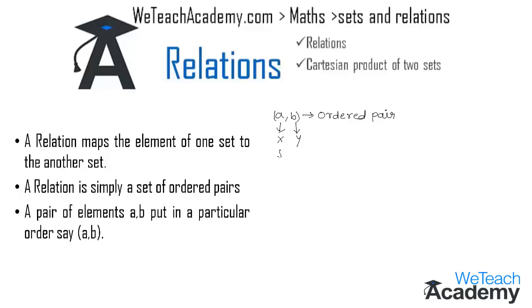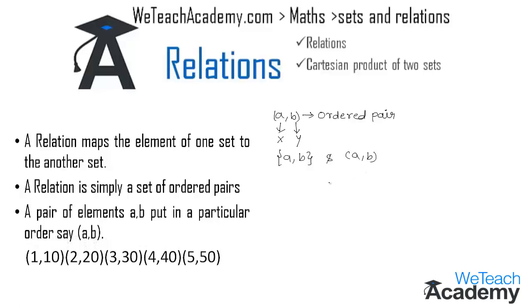The set {a, b} and the ordered pair (a, b) are two different terms. For example, here we have some ordered pairs: (1,10), (2,20), (3,30), (4,40), and (5,50). Now let me explain this concept with the help of an example.